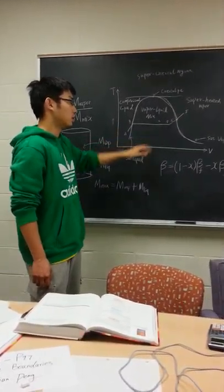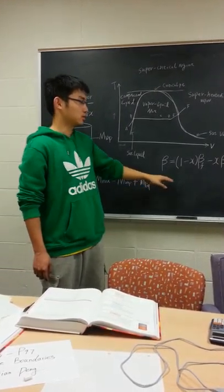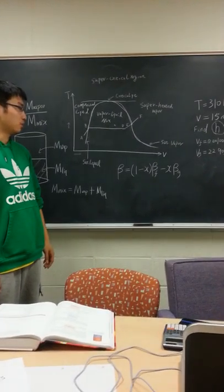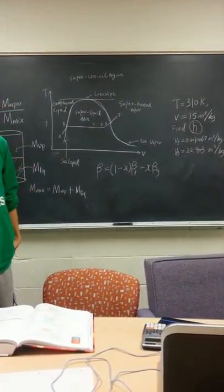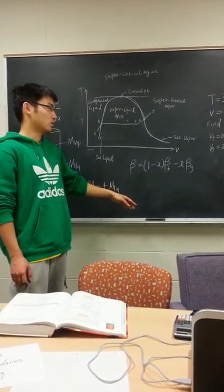For the middle part, we have to calculate the quality using this equation. For this equation, the beta represents any mass-specific properties such as U, H, or V.